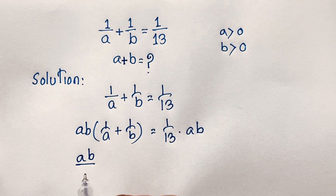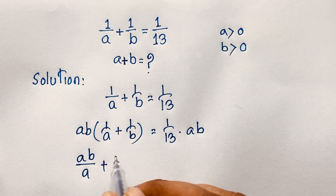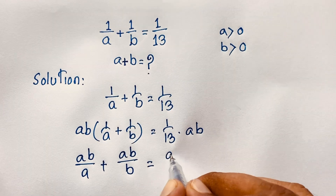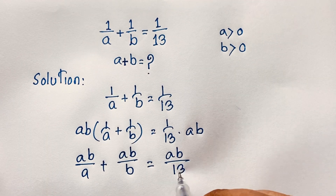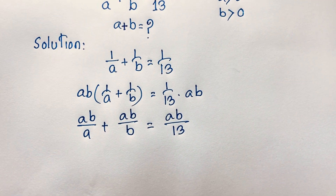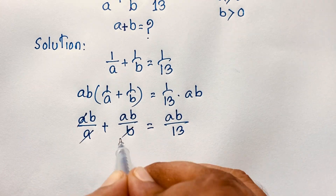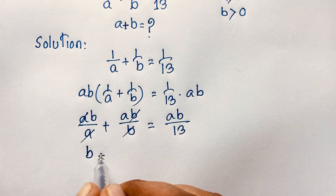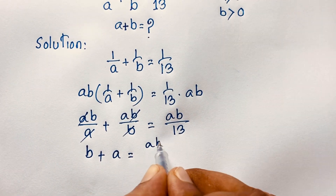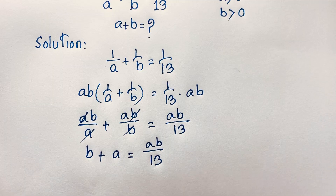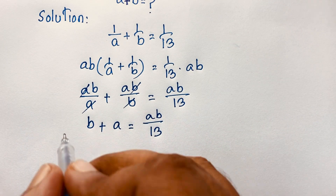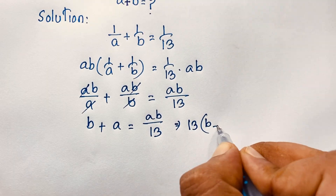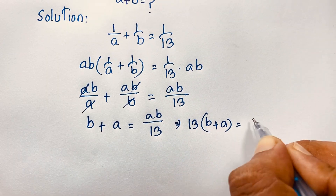Here ab times 1 over a gives ab over a, plus ab times 1 over b gives ab over b, equals ab over 13. The a's cancel and the b's cancel, so we find b plus a equals ab over 13. Now I multiply both sides by 13.